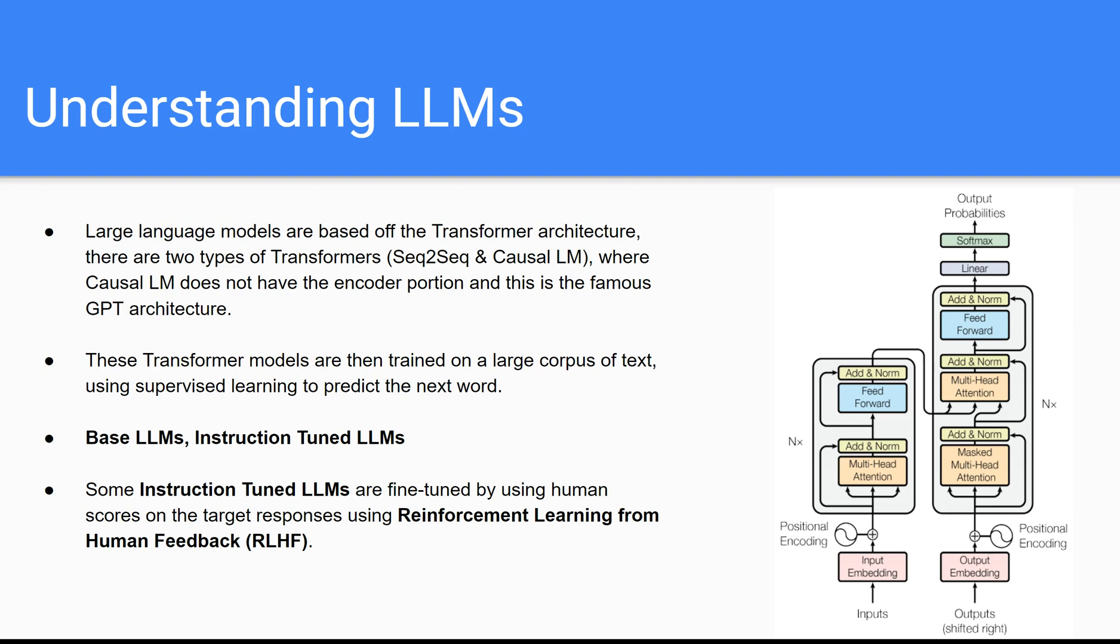And this vectorized representation of that text then gets passed into the decoder if you follow this arrow. And that vectorized representation allows for the computer or the neural network to be able to understand the semantic meaning around that text. The other type of large language model that you'll commonly see is called a Causal-LM. And we'll work with Causal-LMs like GPT-2 in Hugging Face in this course. But a Causal-LM is just this decoder portion.